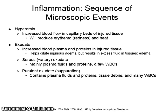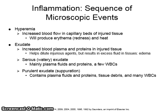As the blood vessels become more permeable, larger molecules and other cells are allowed to escape. This fluid is now called exudate and contains cells and a higher concentration of protein molecules than the transudate. Transudate and exudate help to dilute injurious agents in the tissue. Serous, or watery, exudate mainly contains plasma fluids and proteins but few white blood cells.